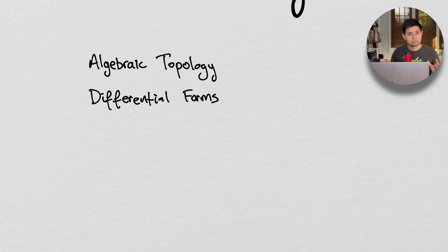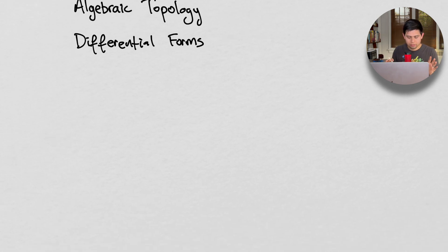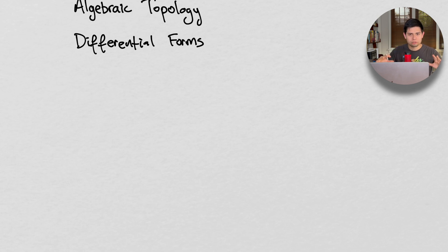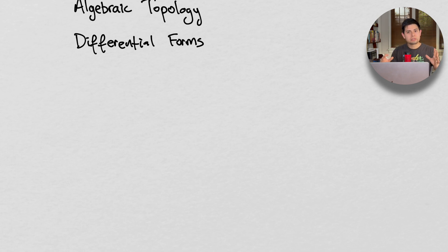Chern-Simons theory — we're going to start it next week, probably every Thursday. The way I sort of like to explain topology in layman's terms — and I'm going to try to really flesh out this theory in layman's terms because it's one of the more advanced theories in physics and you need to have essentially everything as a prerequisite. What you need — so imagine you have a picture, imagine you have a photo.